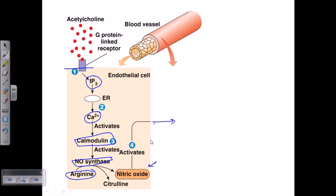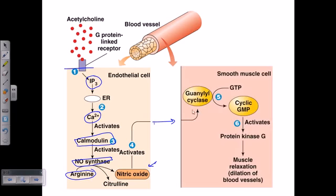This nitric oxide will go and activate guanylyl cyclase. Guanylyl cyclase is an enzyme which makes the GTP circularize. It converts GTP into cyclic GMP because triphosphate was there and one phosphate is getting circularized. Two other phosphates are released, so it becomes monophosphate from triphosphate. Cyclic GMP is produced.